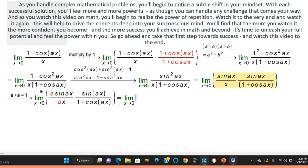I should have an equals here. Of sine of ax divided by ax. And then after that, we have the limit as x approaches 0 of sine of ax divided by 1 plus cosine ax this way.